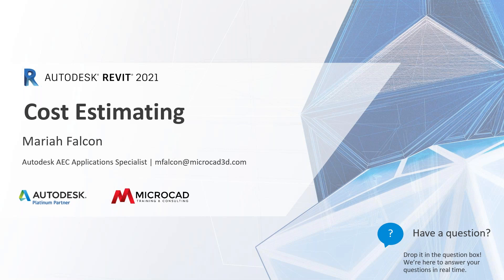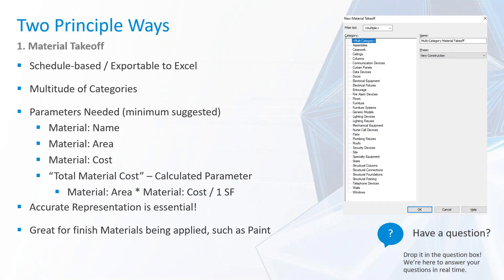We're going to speak about the two ways that you can do some takeoffs within Revit. Our first way is what we are referring to as a material takeoff. Both of these are going to be schedule-based and you can export them to Excel. There is a multitude of categories that you can work with. Some minimum suggested parameters for your schedules would be material name, material area, material cost, and then you are going to need a calculated parameter for a total material cost — that's going to equal that area times that cost, dividing by one just to ensure that our units are all correct.